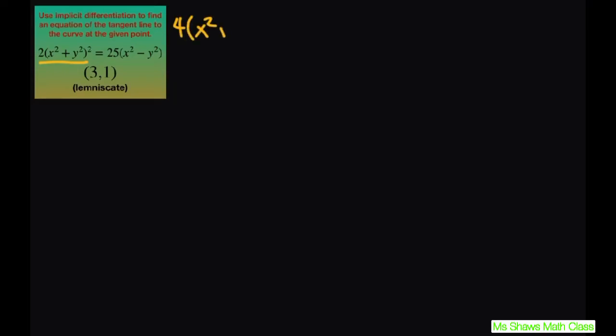We have to use the chain rule on the left hand side. So this is going to be 4 times x squared plus y squared times the derivative of your inner function, which is going to be 2x plus 2y times the derivative of y. I'm just going to put y prime for that.